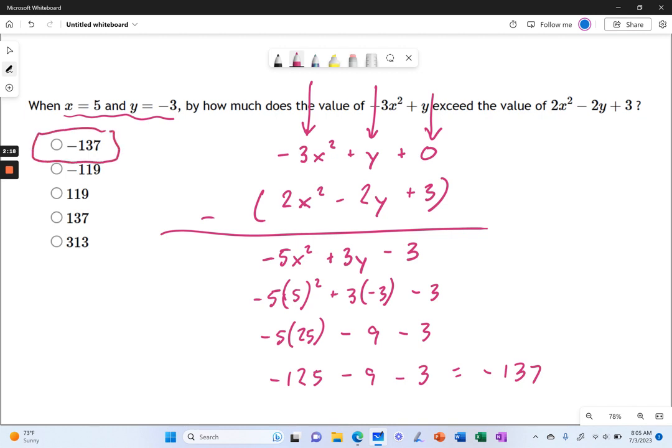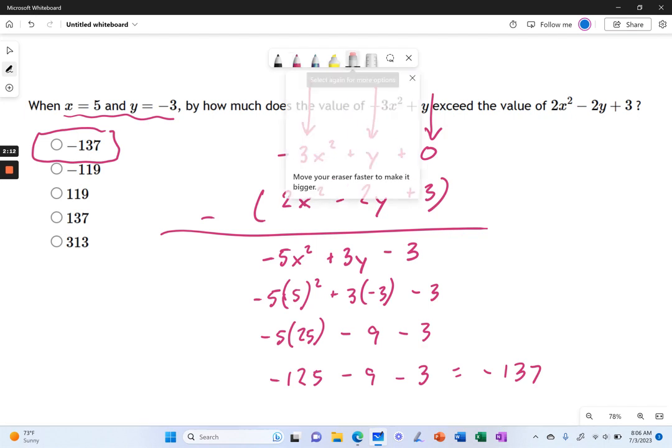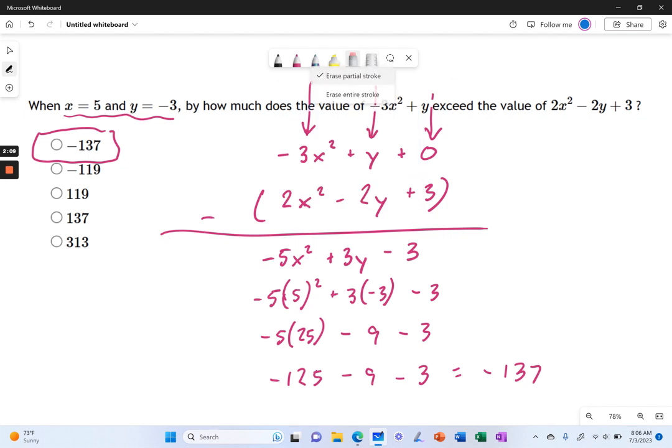Now, the slow way that we could have done it, just as a reminder, we could have plugged x equals 5, y equals negative 3 into this guy and found a value. Then do the same thing here and found a value. We've taken the difference of the two of them. But I think that would be a little more algebra. It's a fine method, just not quite as quick.